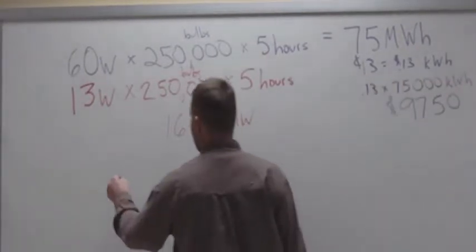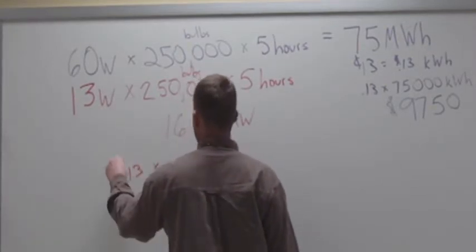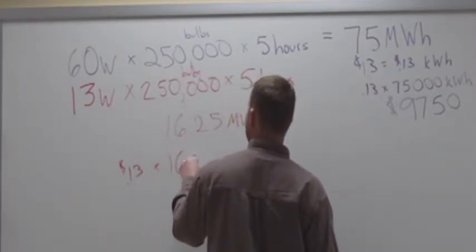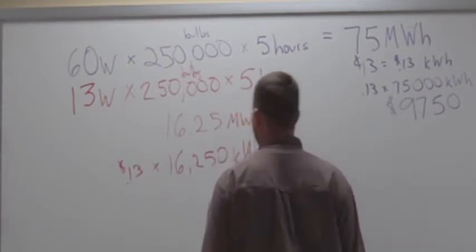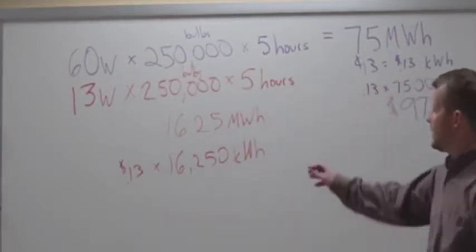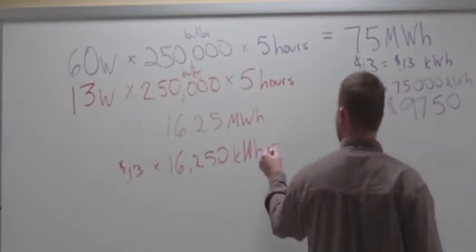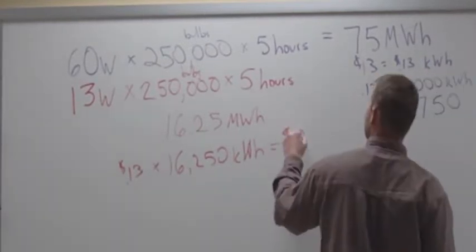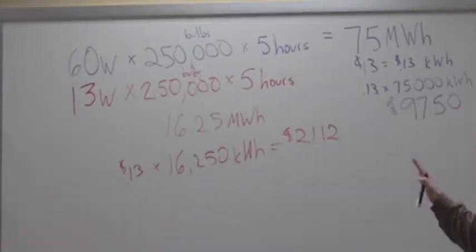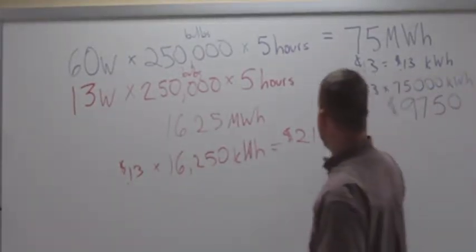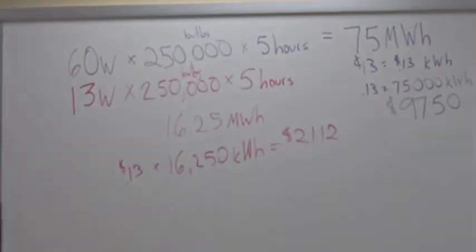Let's do that again now. At 13 cents multiplied by 16,250 kilowatt-hours. Let's get that hour in there because it's absolutely critical. And what was the cost that you had this time? $2,112. So in one day, we would have spent $10,000. We only spent $2,000.